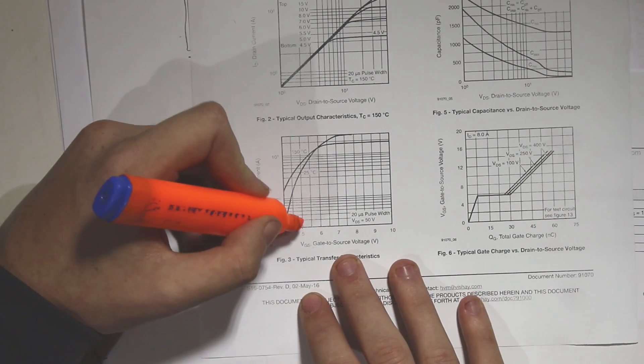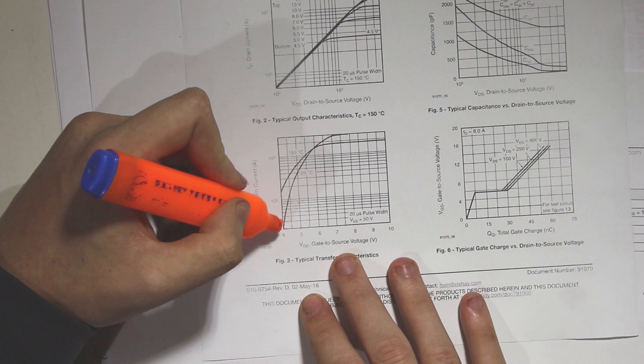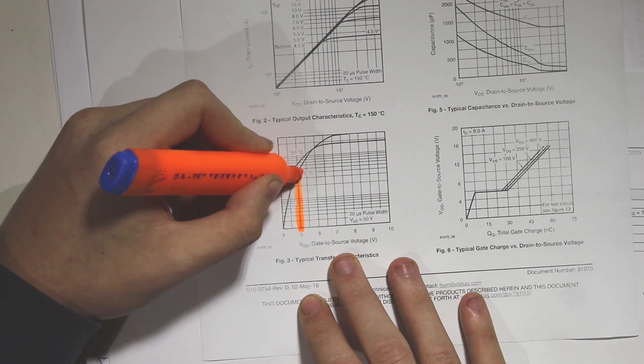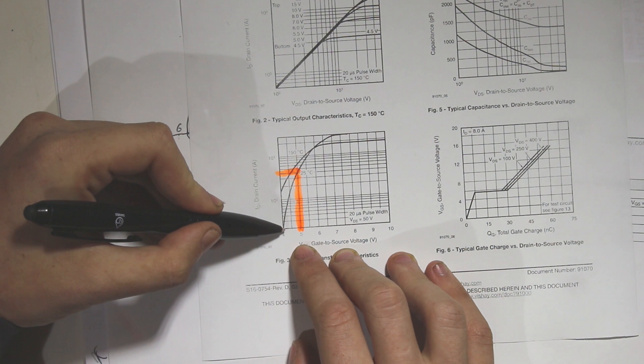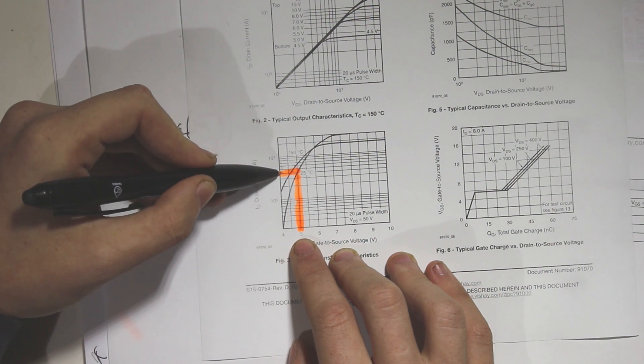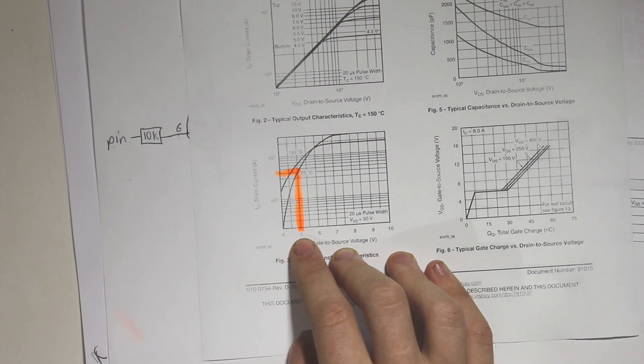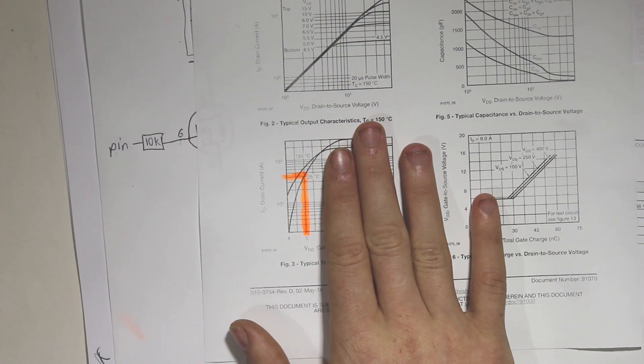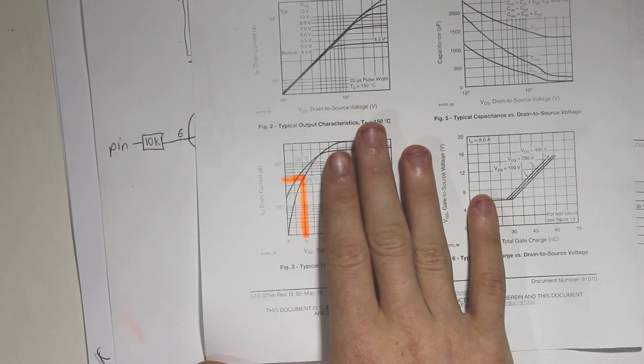And in our case we are only going to look at the 5 volts here. So since the Arduino is only going to output a voltage of 5 volts, so in this case at 5 volts, we can draw about 4 amps. Don't worry too much about these graphs. I'm going to show you an easy way to figure out which MOSFET to use.